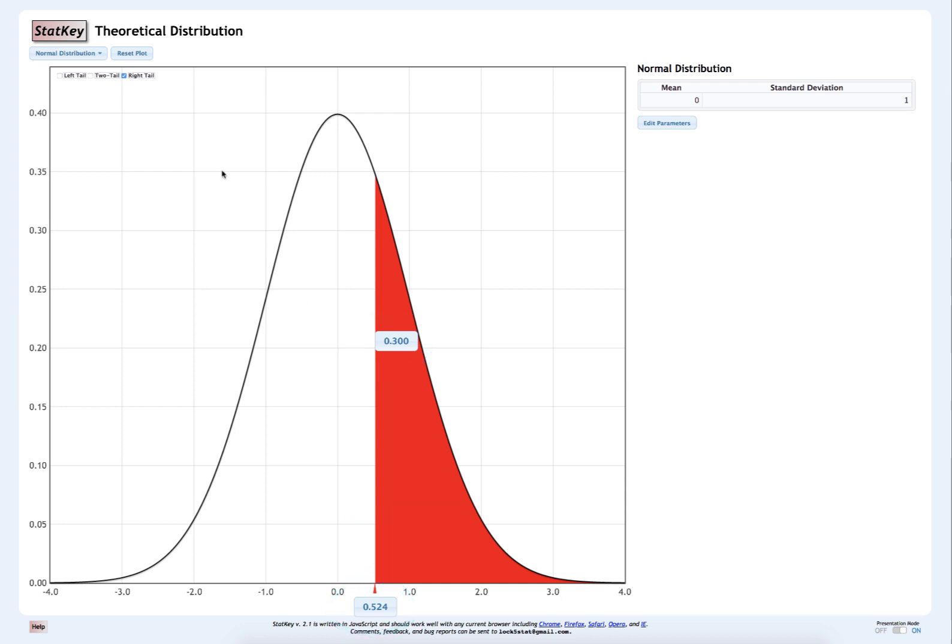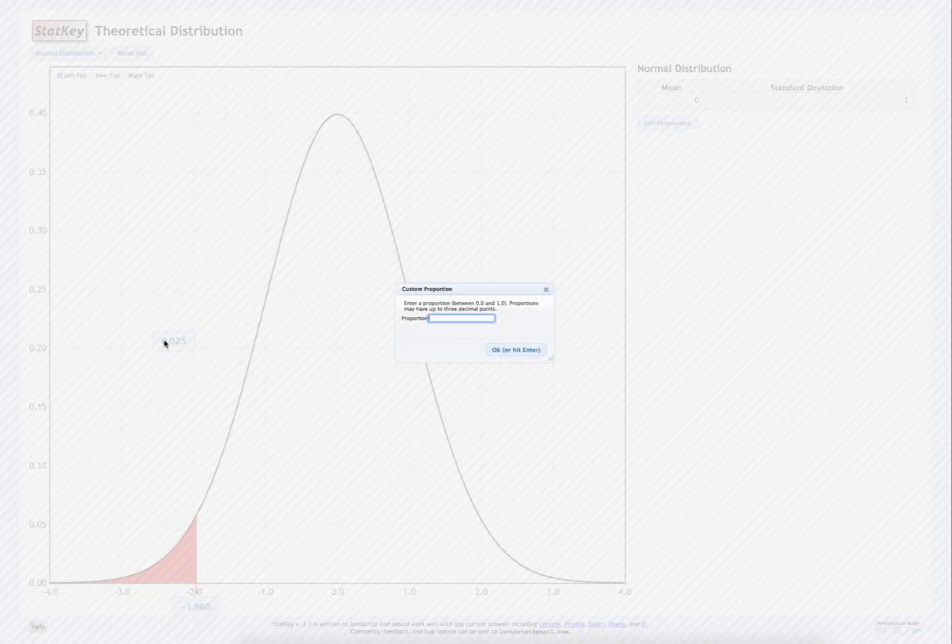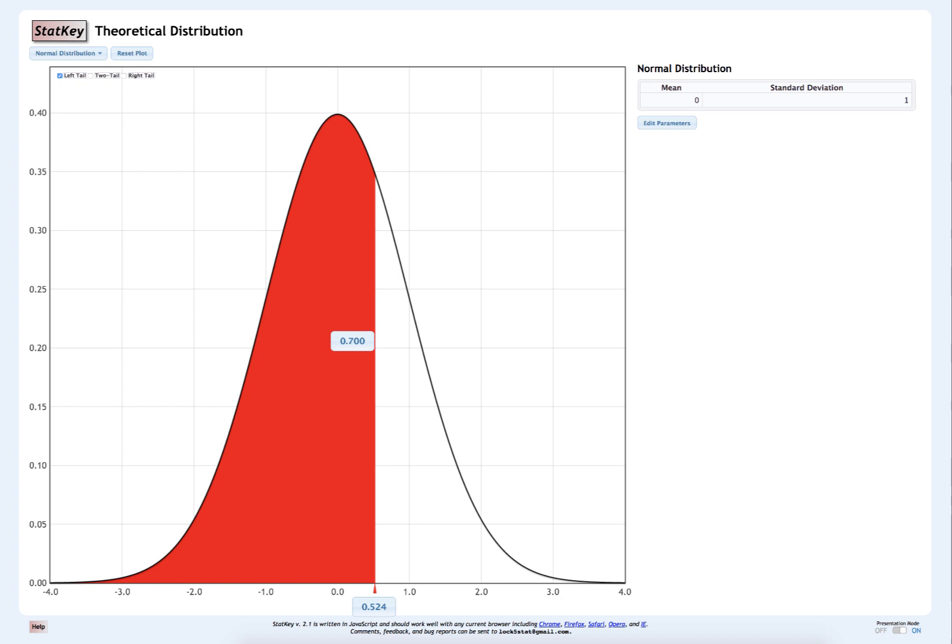Another way to do this is to put 70% in the left tail. I should end up with the same answer. 0.524.